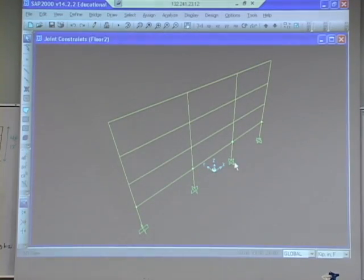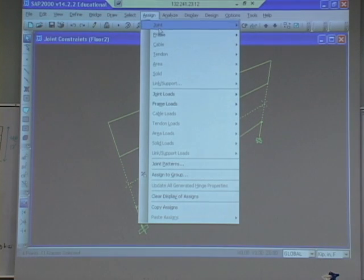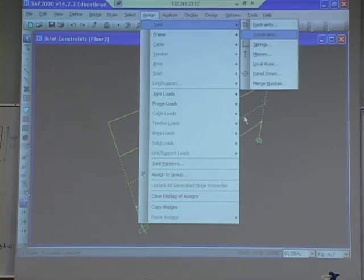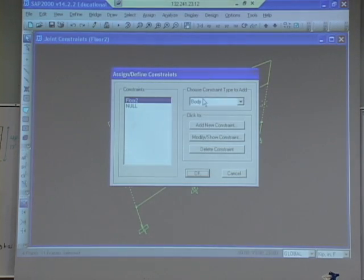Now what we have to do is just do that again for floor three, four, and five. And we need to be careful to do different constraints for each floor because each floor moves together, but floor two and three need to be able to move independently from each other. So we need to actually define separate constraint rules for each floor.